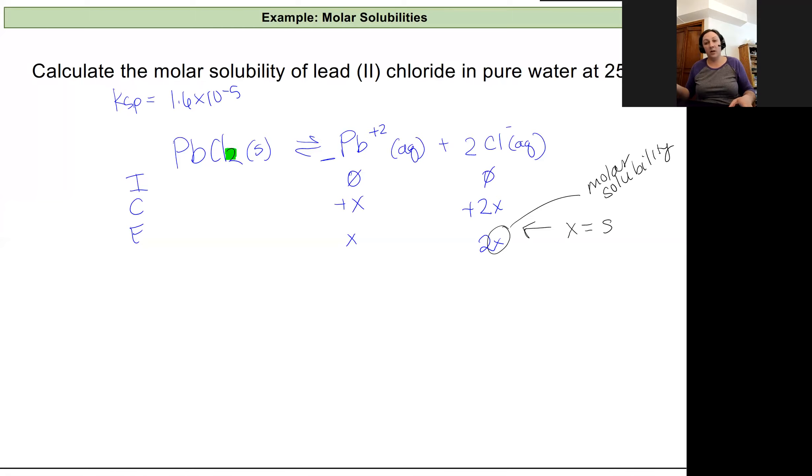So let's go back to our equilibrium constant expression that Ksp is equal to the concentration of lead ions times the concentration of chloride ions squared. And that squared is coming from the two coefficient in front of our chloride ions. So I can start plugging in for our equilibrium values. I know that Ksp, that solubility product, is 1.6 times 10 to the negative fifth. That's equal to x times 2x squared.